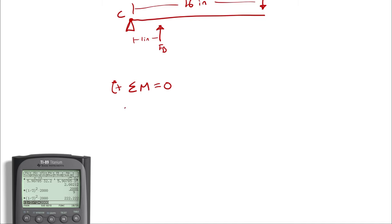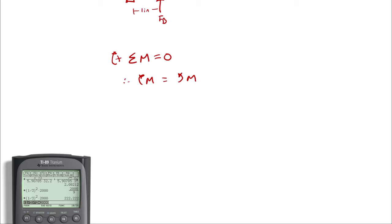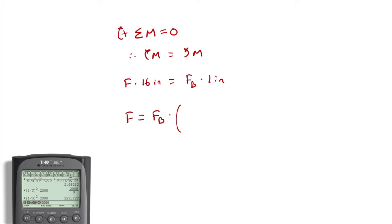Therefore, the clockwise moment must equal the counterclockwise moment, which is going to be F times 16 inches equals FB times 1 inch. So F equals FB times 1 over 16.